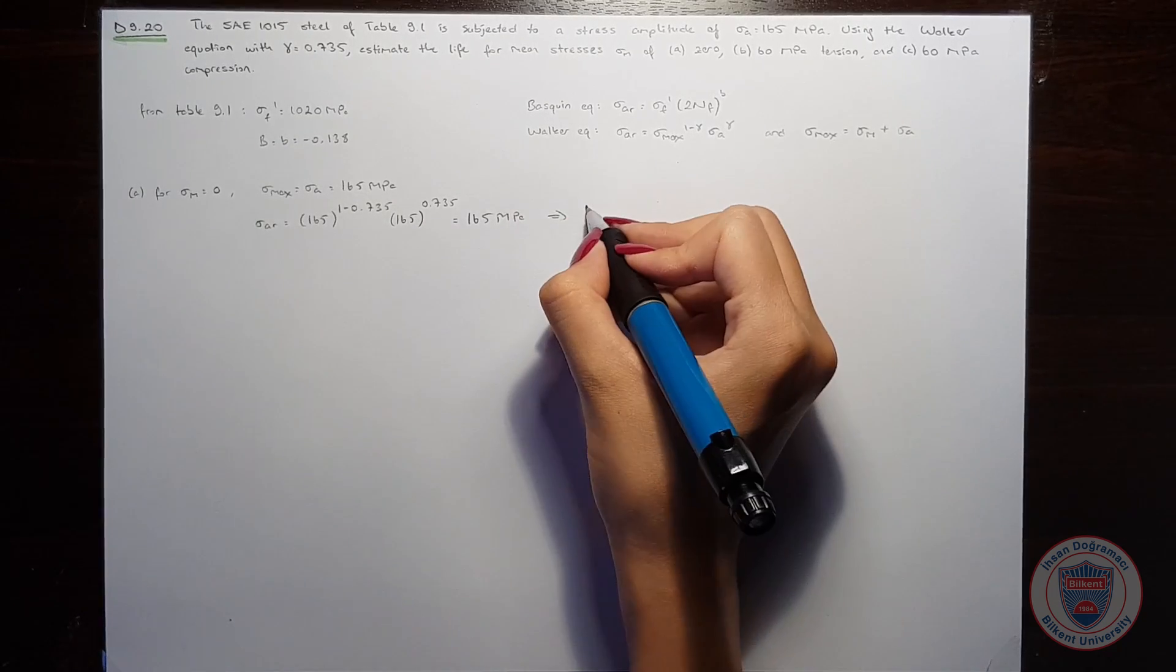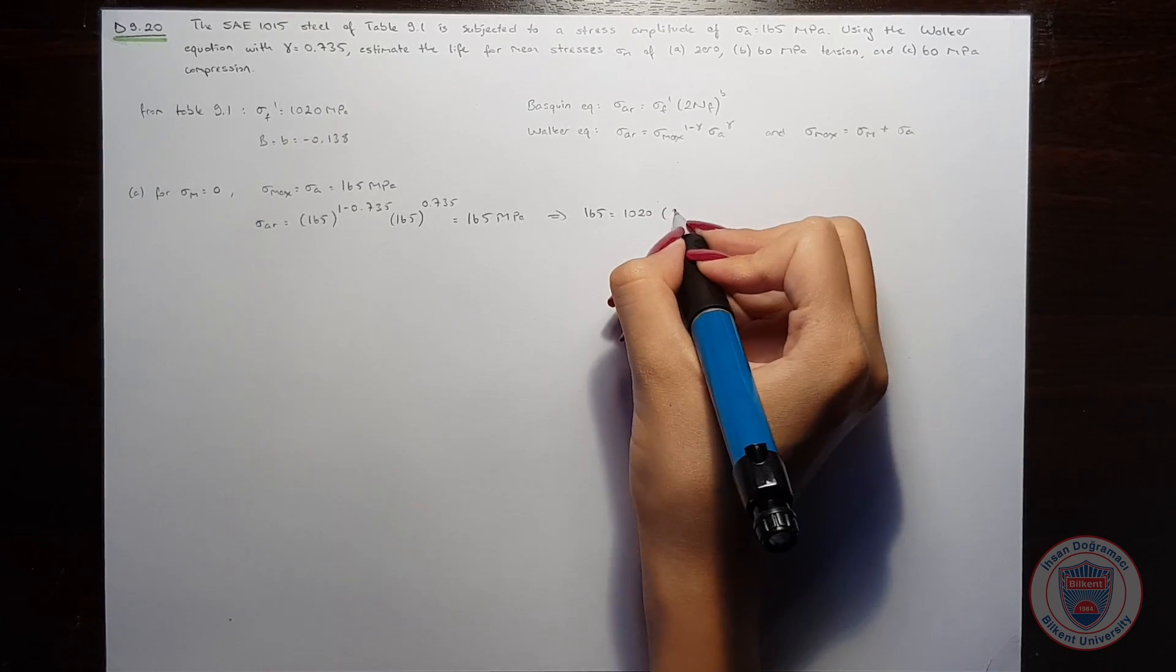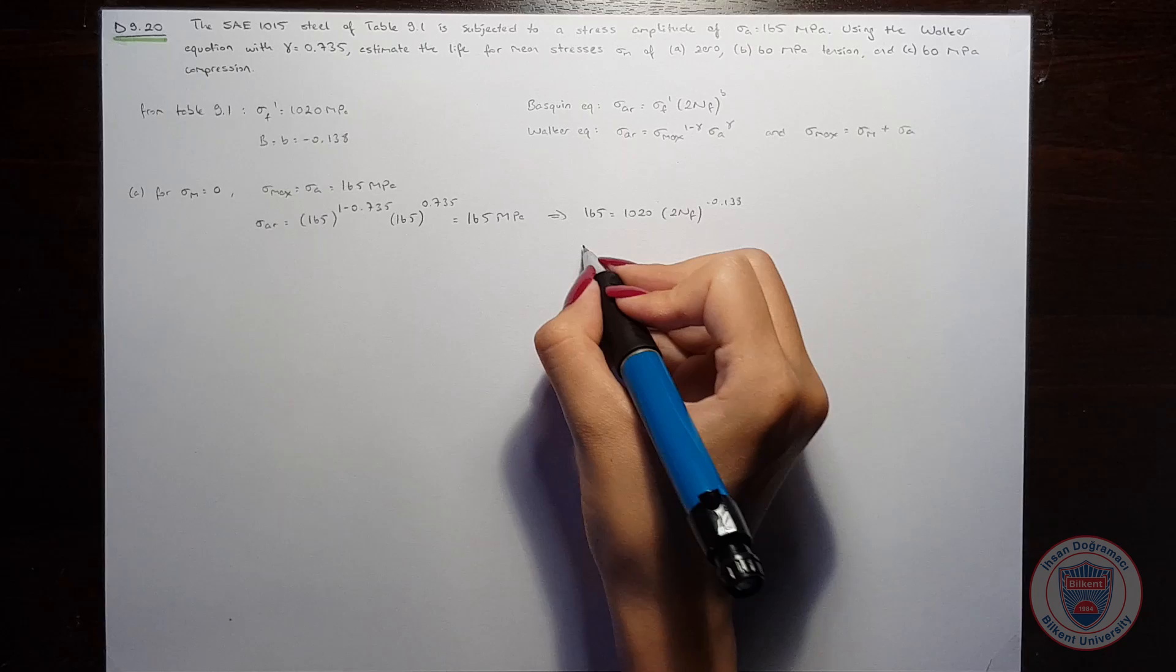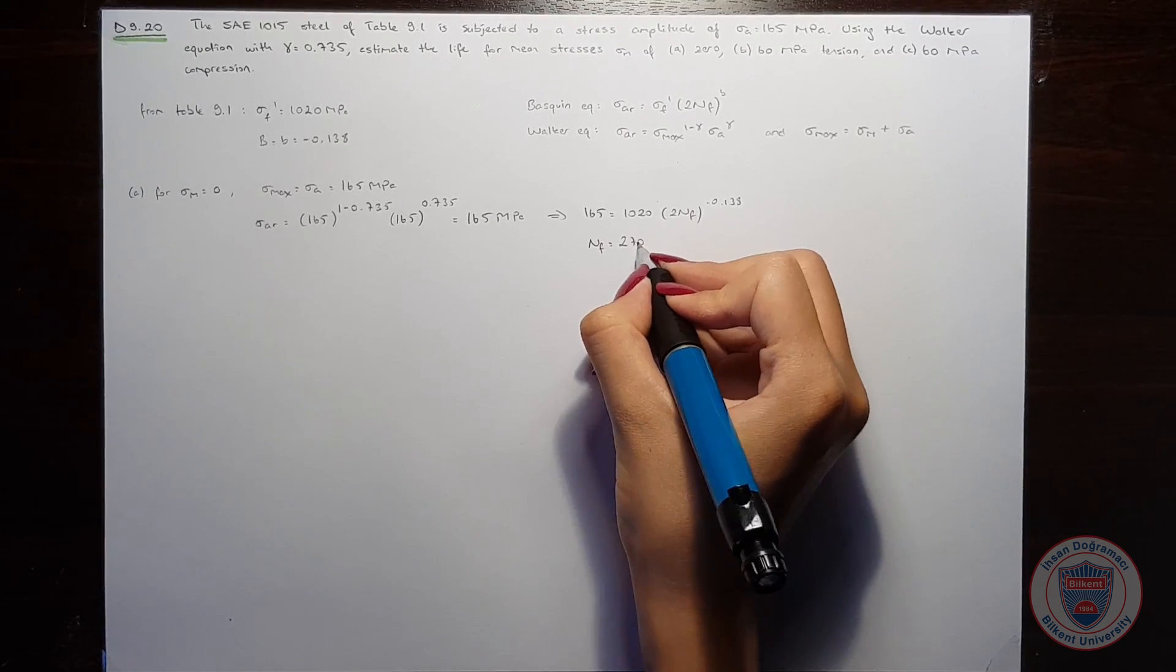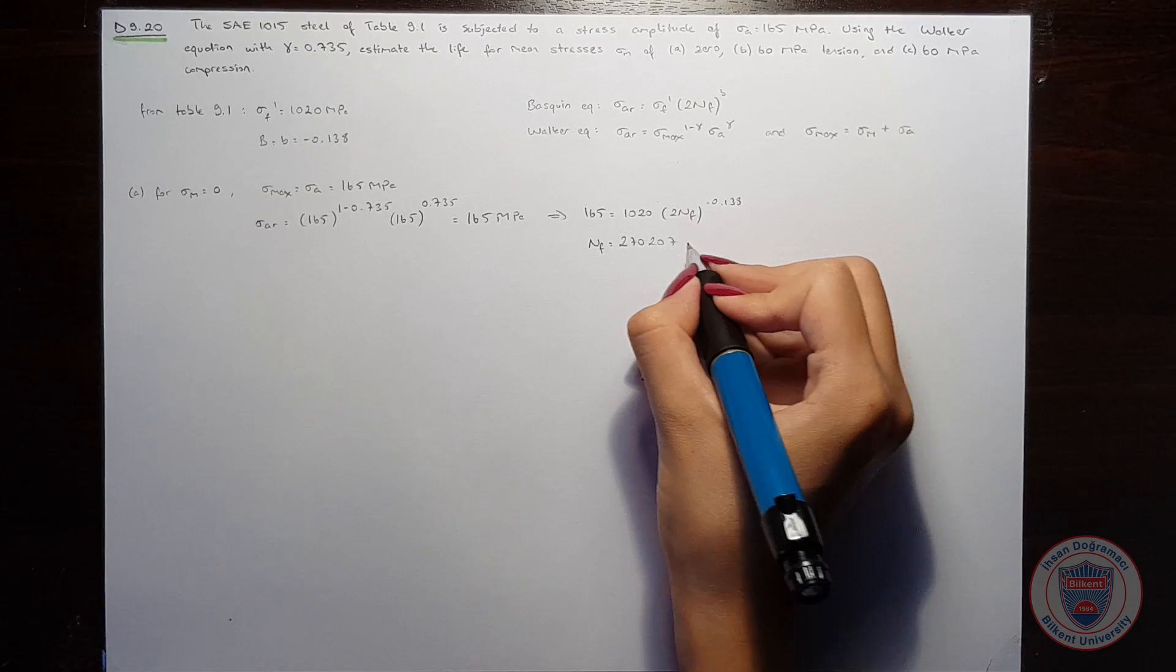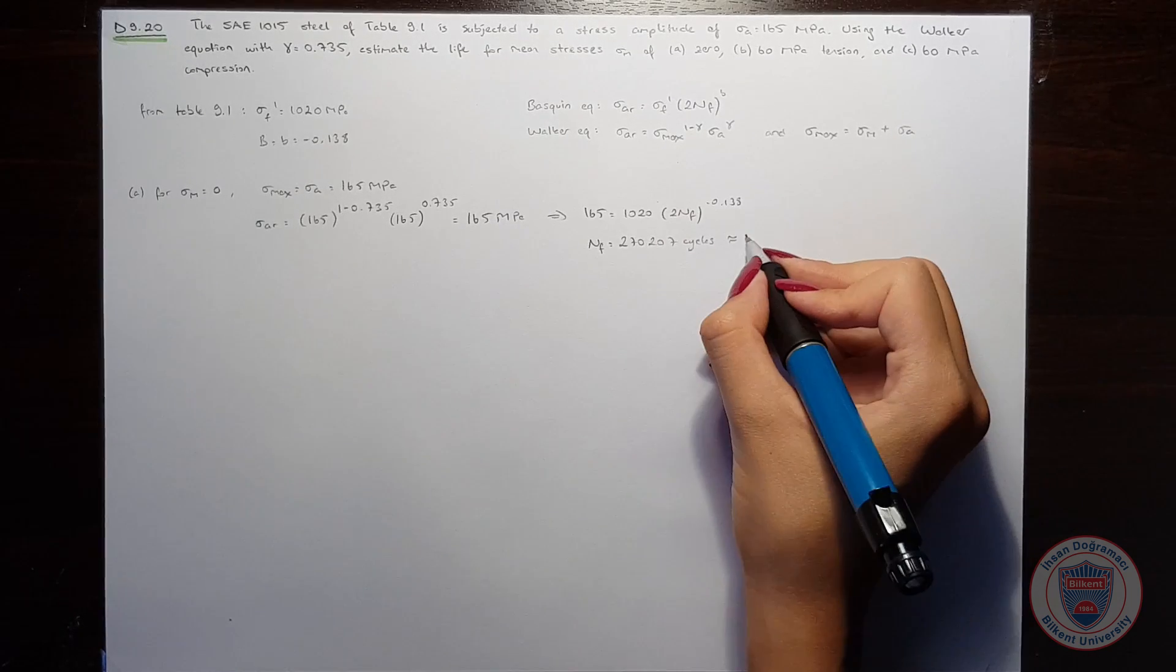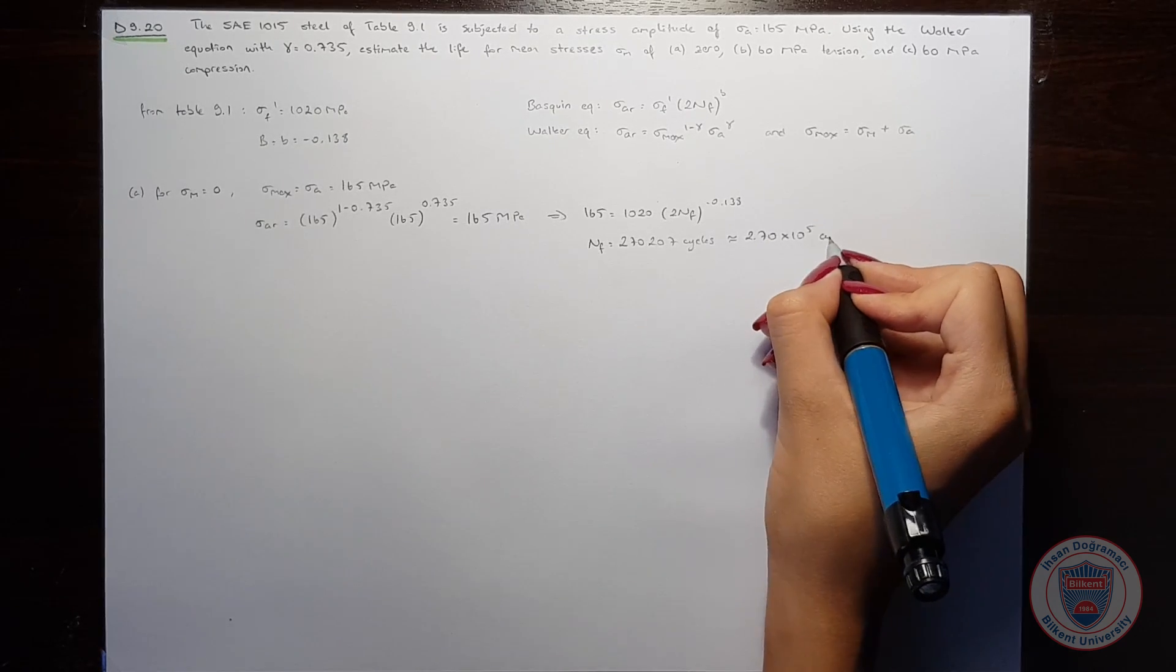Using the Baskin equation, the number of cycles equals 270,207, or approximately 2.70 times 10 to the power of 5 cycles.